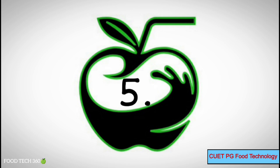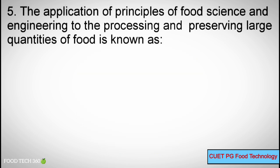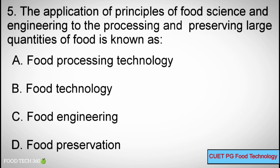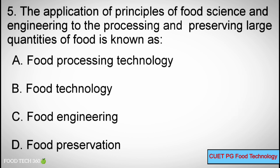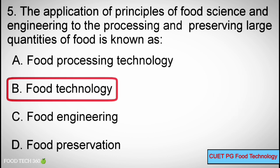Question number 5. The application of principles of food science and engineering to the processing and preserving large quantities of food is known as: Options: A. Food Processing Technology, B. Food Technology, C. Food Engineering, D. Food Preservation. Correct answer: B. Food Technology.